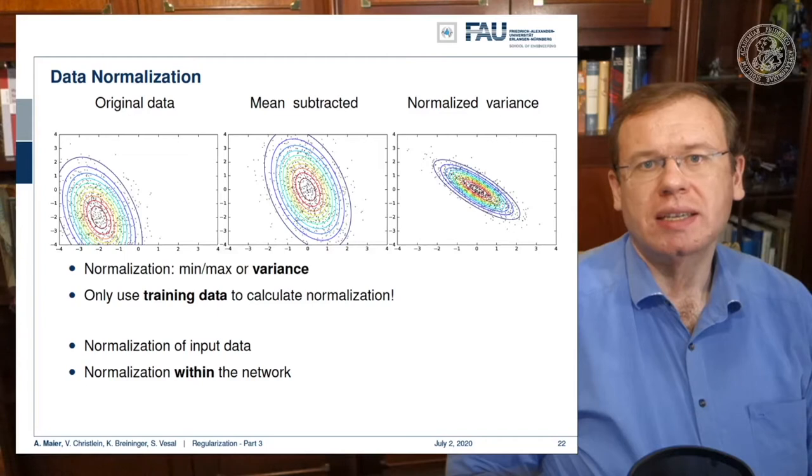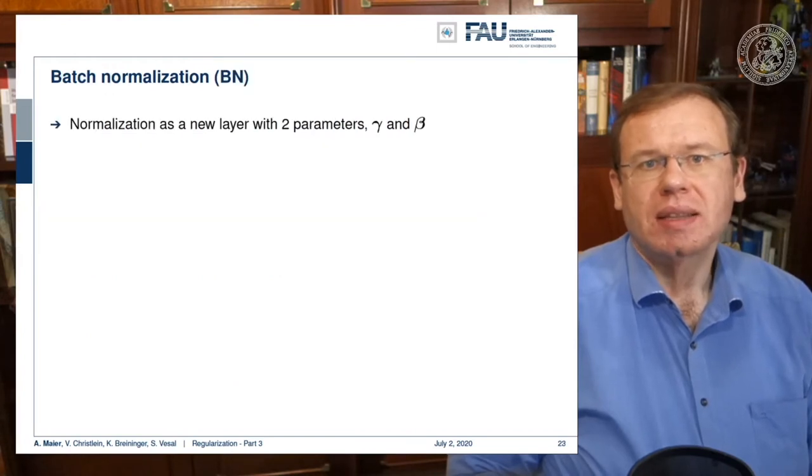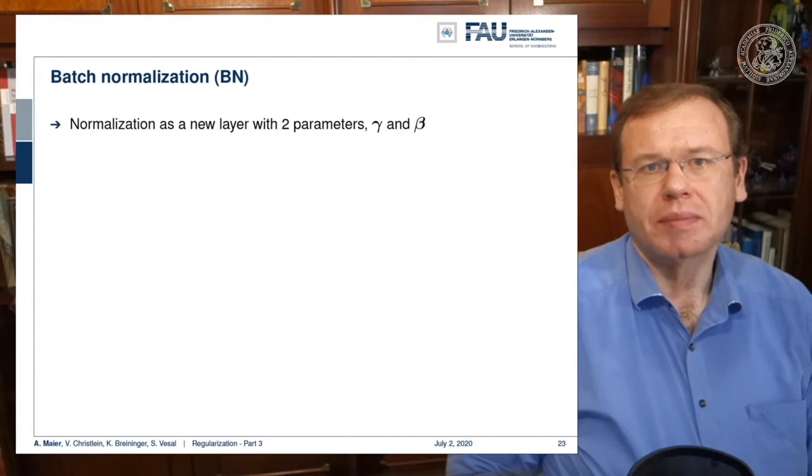Another approach is not just to normalize before the network, but you can also normalize within the network. This then leads to the concept of batch normalization. The idea is to introduce new layers with parameters gamma and beta. Gamma and beta are being used to rescale the output of the layer.